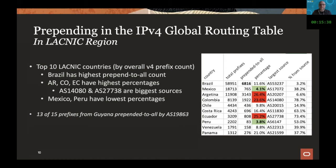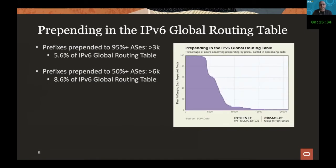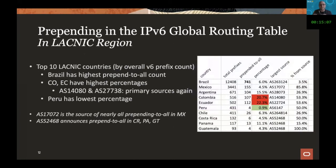For V6, the routing table is smaller and the percentage of prepending to all is also lower. This may simply be due to less time to build up traffic engineering practices over time, or just less traffic engineering in V6 generally. Looking at the top 10 LACNIC countries by V6 prefix count, we again see Colombia and Ecuador with very high percentages, with incumbents accounting for a large share. Peru has very low prepending to all in their V6 internet.